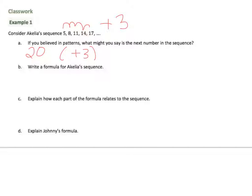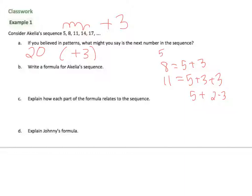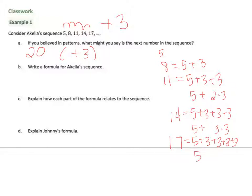Write a formula for Achilles' sequence. Here's another way to look at it: starting with 5, then 8 which is 5 plus 3, then 11 which is 5 plus 3 plus 3, or 5 plus 2 times 3. Then 14, which is 5 plus 3 times 3, and 17 which is 5 plus 4 times 3. Do you see the pattern yet?